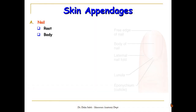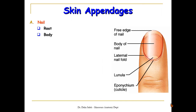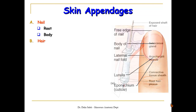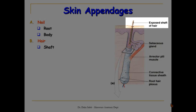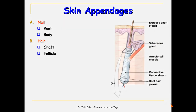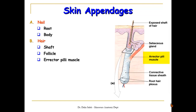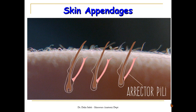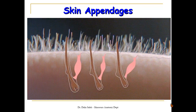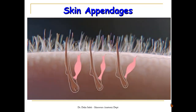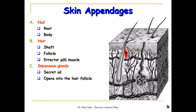For the skin appendages, we have the following. We have the nails — the root is buried inside the skin while the body you can see on the surface. We also have hair, formed of a shaft which is the exposed part on the surface of the skin, and a hair follicle embedded within the dermis. A muscle called the erector pili muscle is attached to one side of the follicle; when it contracts, it pulls the follicle towards it, leading to erection of the hair. This muscle is under involuntary control and controlled by the sympathetic nervous system. We also have sebaceous glands, or oil glands — they secrete sebum or oil and open into the hair follicle. The sebum lubricates the hair, makes it shiny, and prevents it from drying and becoming brittle.